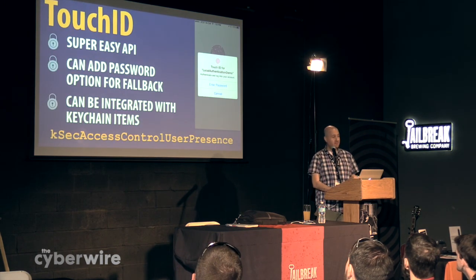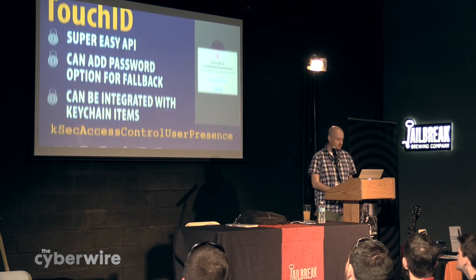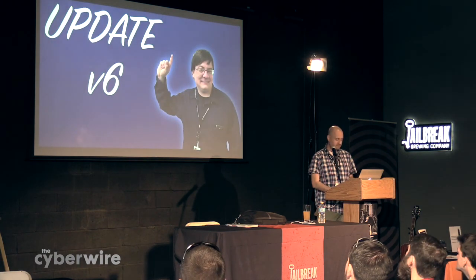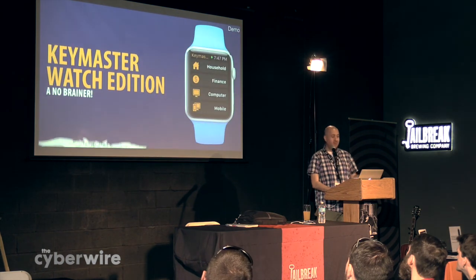The default for keychain items is 'when unlocked,' but you have access to six or seven other accessibility options. The framework used for Touch ID is called Local Authentication — if you're analyzing an app and see that framework imported, they're definitely using the Touch ID mechanism on the device. It also has an option for a password fallback. Update 6 was adding Apple Watch support.